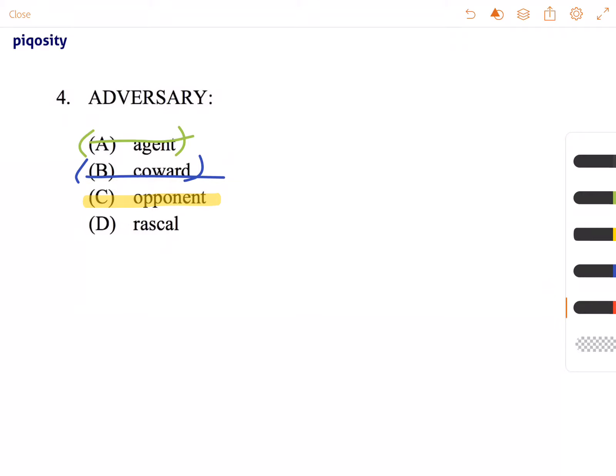And then rascal might be what you think your adversary is, or one who's mischievous or cheeky. You might say, okay, this person is against me so they're very mischievous, but that's not what an adversary is.